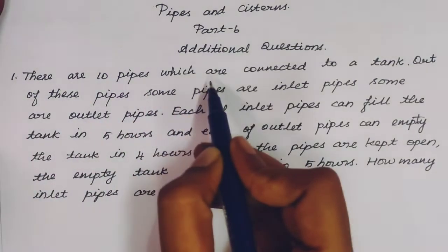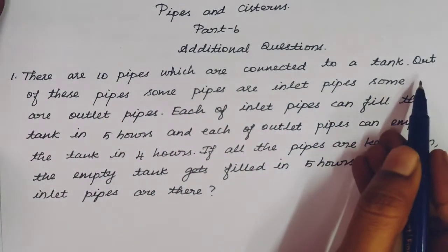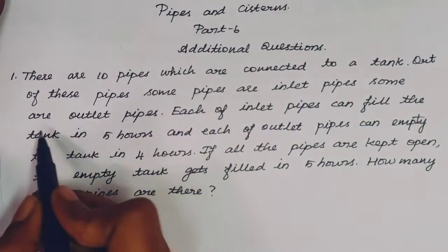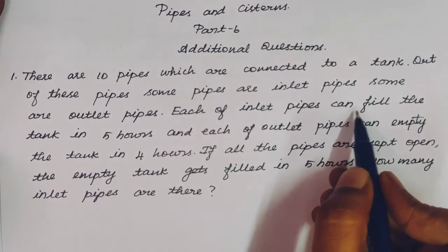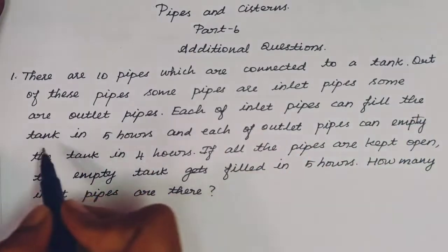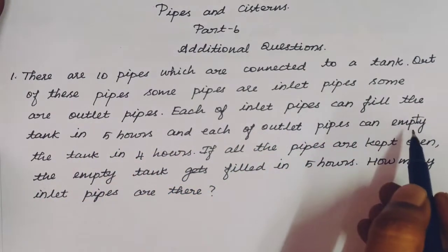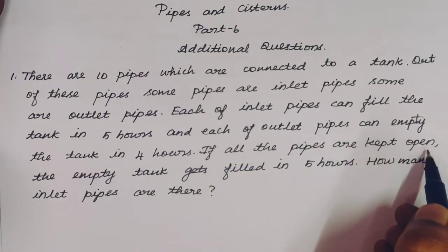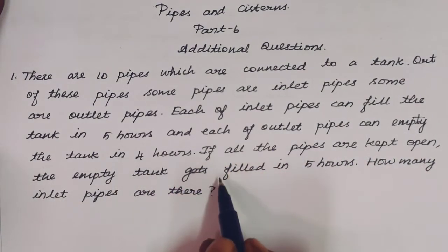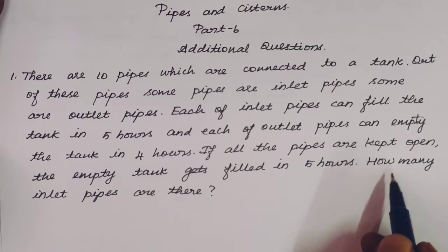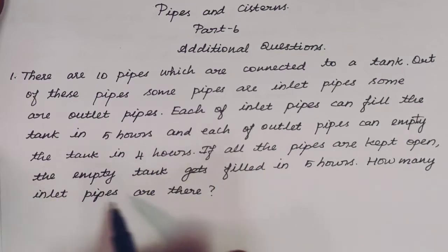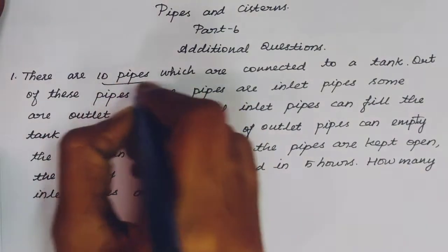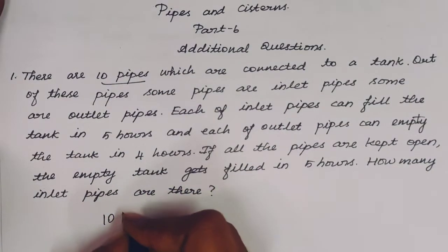First question: there are 10 pipes which are connected to a tank. Out of these pipes, some pipes are inlet pipes and some are outlet pipes. Each of the inlet pipes can fill the tank in 5 hours and each of the outlet pipes can empty the tank in 4 hours. If all the pipes are kept open, the empty tank gets filled in some time. How many inlet pipes are there? So total 10 pipes.